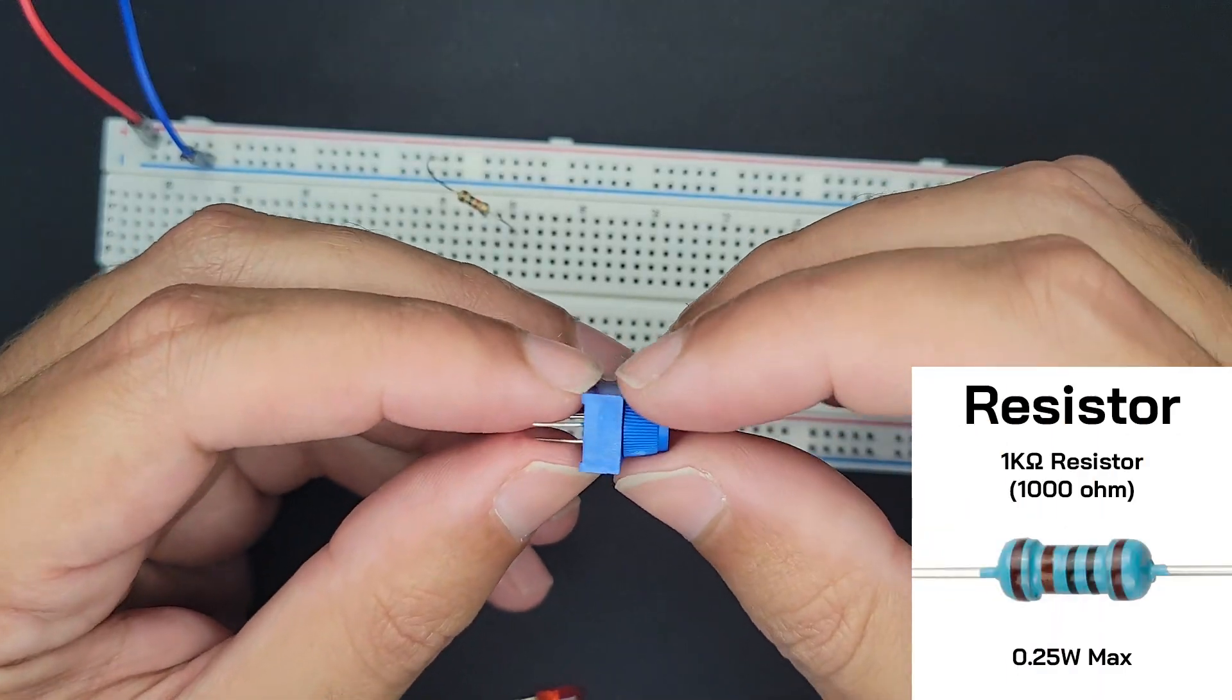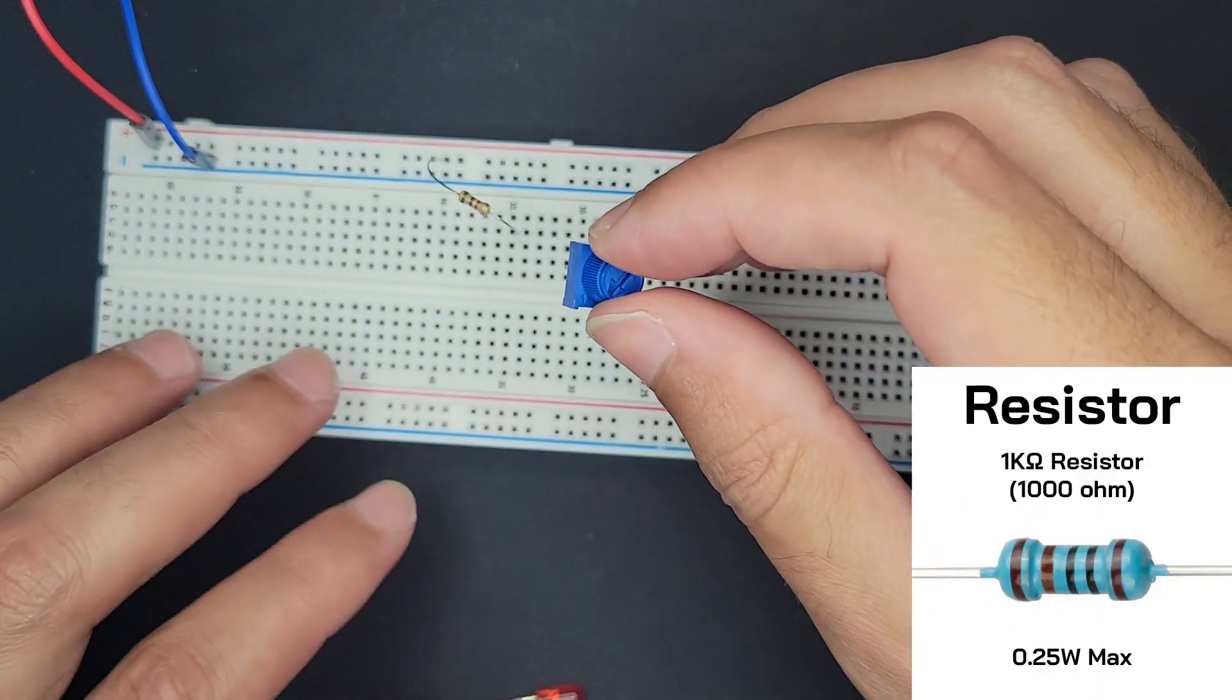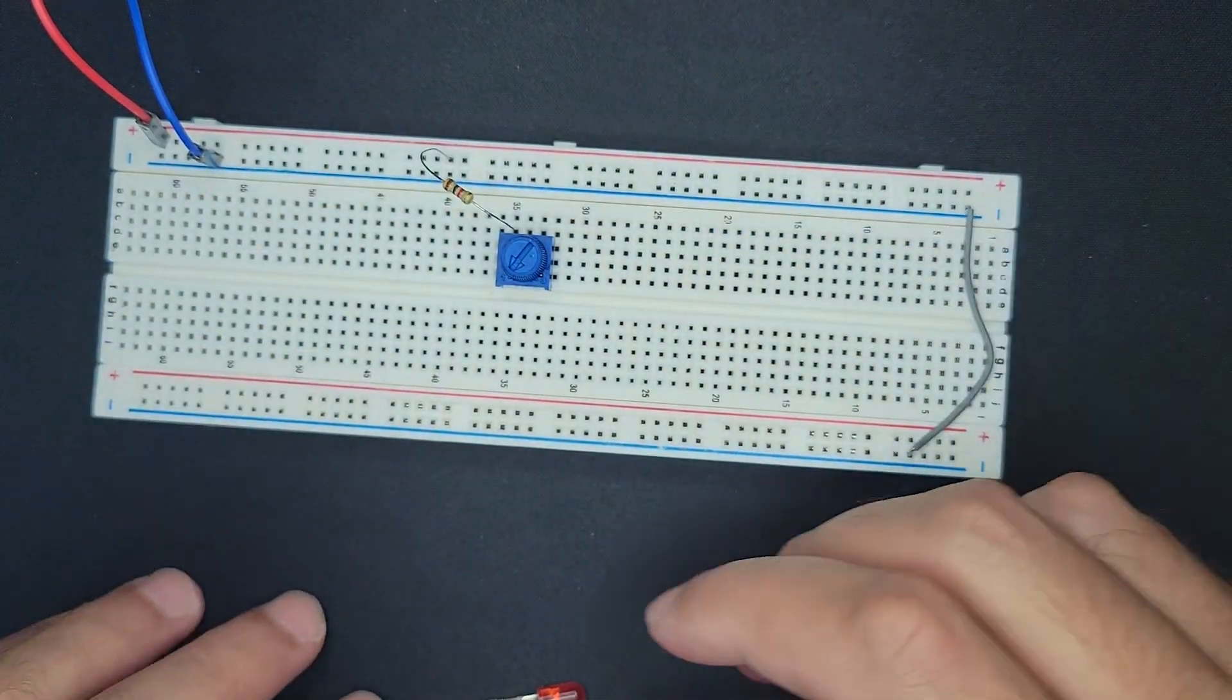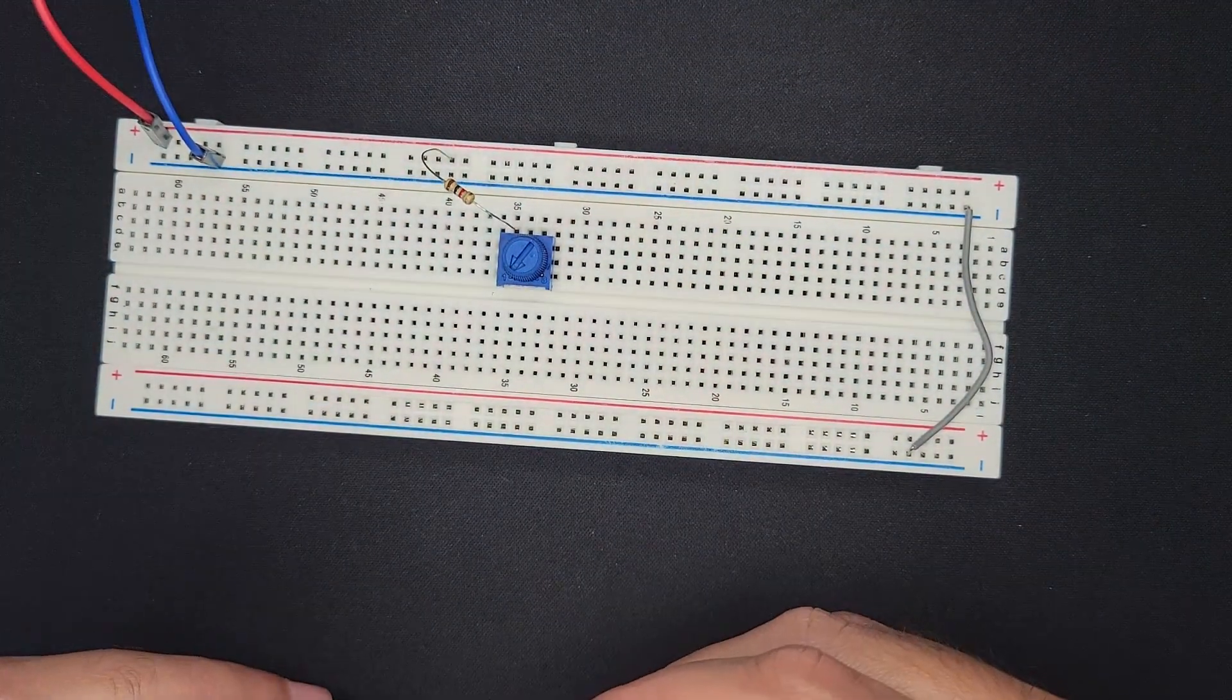This is a 1,000 ohm resistor. I'll put the leftmost pin into the resistor, and then the center pin, I'll put the LED and then put it to ground.